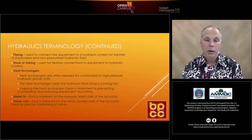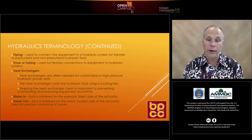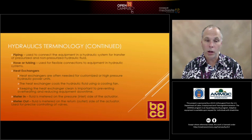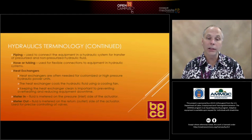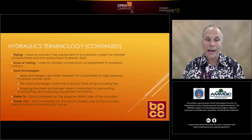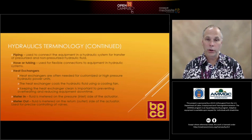The term piping — you have different types. You have hard pipe, which connects equipment in a hydraulic system to transfer pressurized or non-pressurized hydraulic fluid. You may also have hose or tubing, which are flexible types of pipes or tubings used to make your connections. You want to make sure your piping and hosing are all sufficient for the size of the hydraulic system you have.